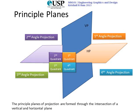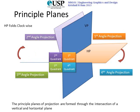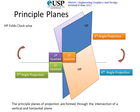The rule for the horizontal plane is that it folds clockwise. Only the first and third angle projections are useful; the second and fourth are not. This is because the horizontal plane folds clockwise — the second quadrant will fold on itself, and the same will happen for the fourth quadrant.